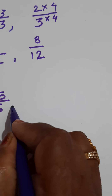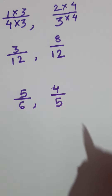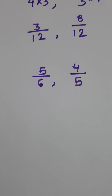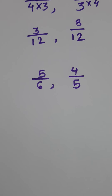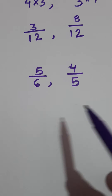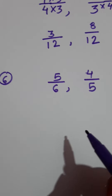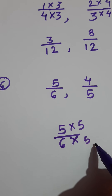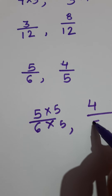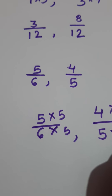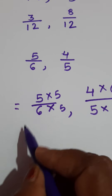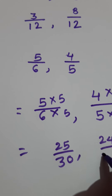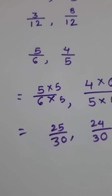Look at the sixth example: 5 upon 6 and 4 upon 5. How to make equal denominators? The same method. When the denominators are from the same table, we can convert the small number into the big. But when they are different, we multiply the first fraction by the second denominator and the second fraction by the first denominator. So: 5 upon 6 multiply both by 5, and the second fraction 4 upon 5 multiply both by 6. So: 5 fives are 25, 6 fives are 30, 4 sixes are 24, 5 sixes are 30. This way we get the like fractions.